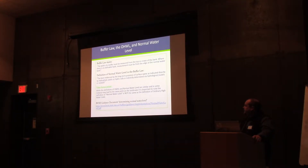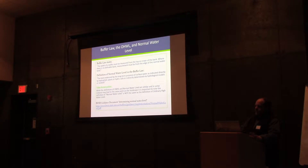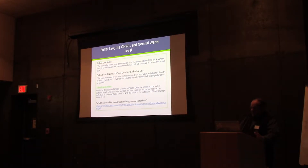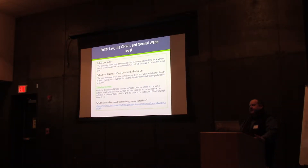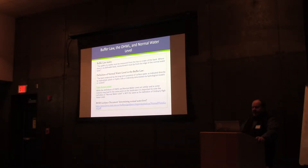I wanted to mention a little bit about buffer law, OHW, and normal water levels. The buffer law says the width of a buffer must be measured from the top or crown of the bank; where there is no definable bank, measurement must begin from the edge of the normal water level. There is a definition of normal water level, and if you read that definition, it's different than OHW. The take-home point is that the definition of OHW and normal water level are similar and might lead you to the same point on the landscape, but they're not the same definition.